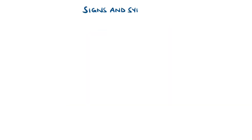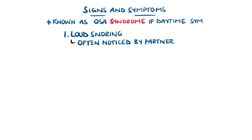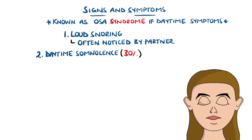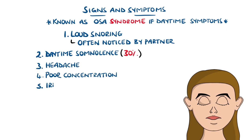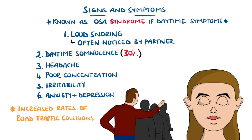Loud snoring is the most common symptom, usually referred by the partner of the patient. However, there can be daytime symptoms too, which is then called obstructive sleep apnea syndrome. 30% of adults experience excessive daytime somnolence, where they may fall asleep for short periods of time, even during conversations. Other symptoms include headache, poor concentration, irritability, and even anxiety and depression. A combination of these may also explain the dramatically increased rates of road traffic collisions.